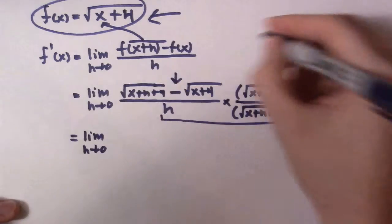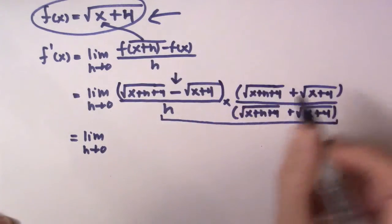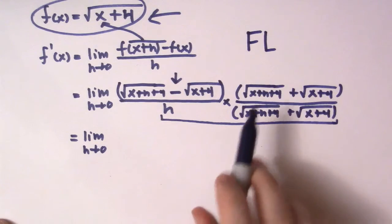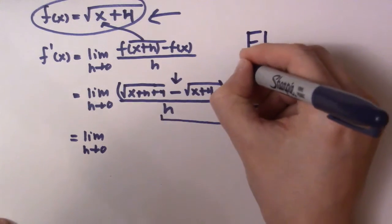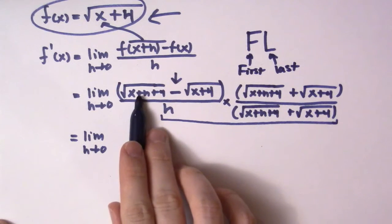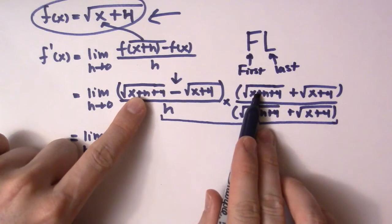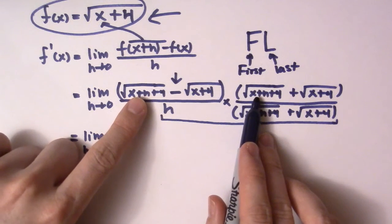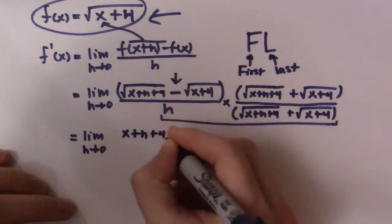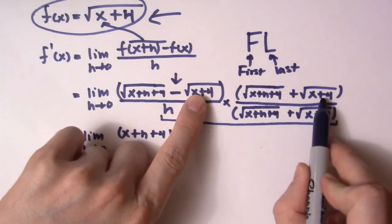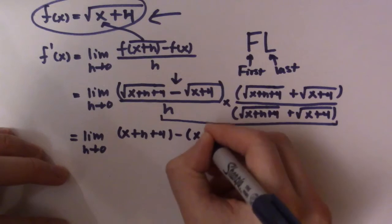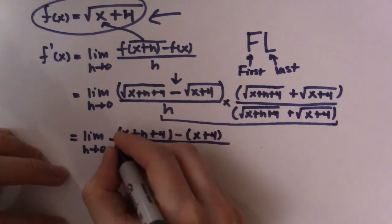For the conjugate, we don't have to worry about FOIL. I tell my students you do FLU — first and last — for the conjugate. So you multiply the first two things together and the last two things together. You're multiplying two square roots with the same radicand, so just take what's underneath. The first gives us x plus h plus 4. Then subtract, and the last gives us x plus 4 — because root of x plus 4 times root of x plus 4 gives x plus 4. The bottom just stays as is.